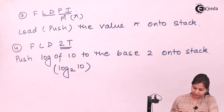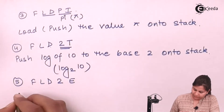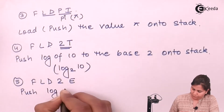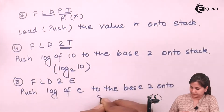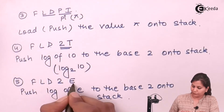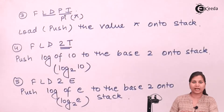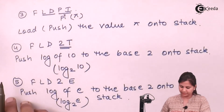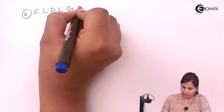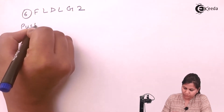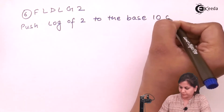The next instruction is FLD2E. This instruction pushes log of E to the base 2 onto the stack. So 2E means log of E to the base 2. The next instruction is FLDLG2. This instruction pushes log of 2 to the base 10 onto the stack.